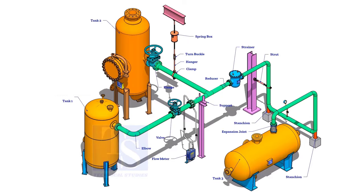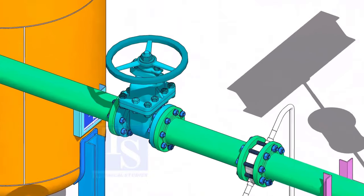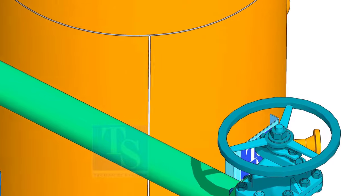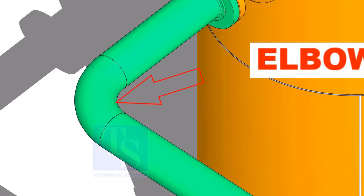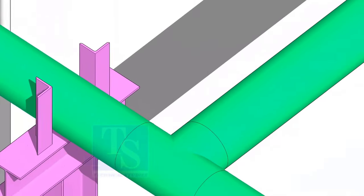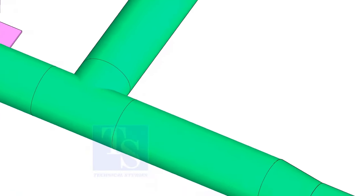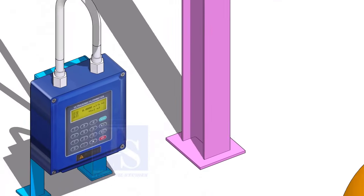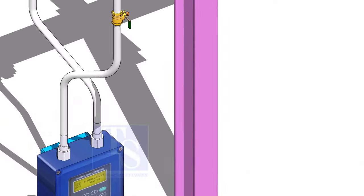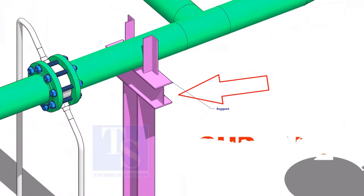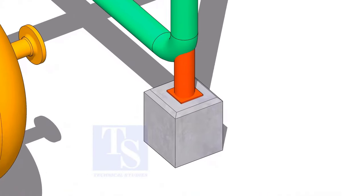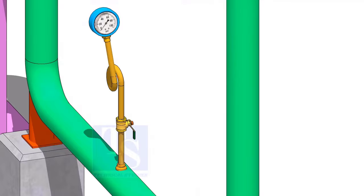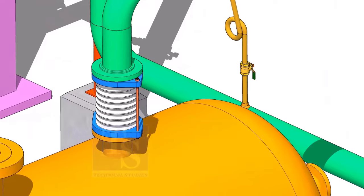Let us have a look at some important piping components: Valve, Flange, Elbow, Tee, Reducer, Flow meter, Support, Stanchion, Pressure gauge, Expansion.